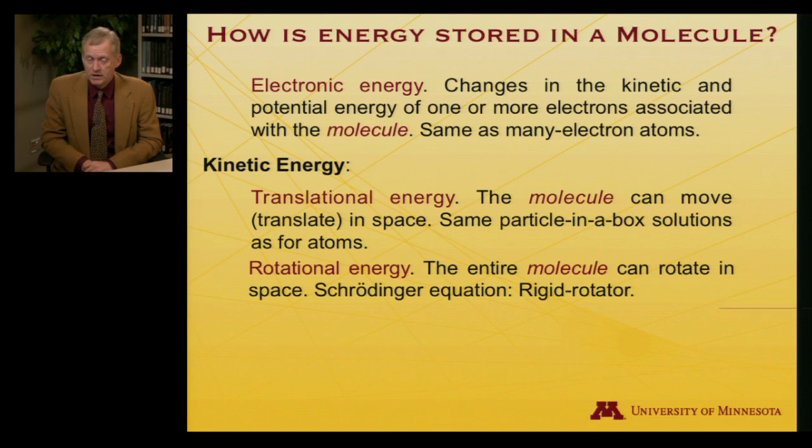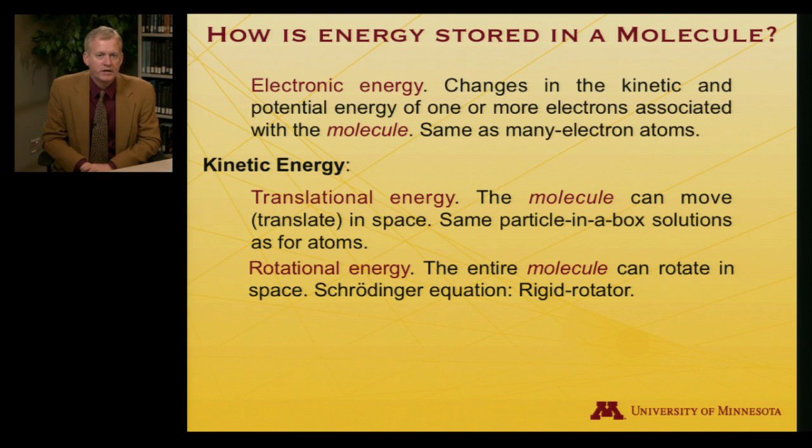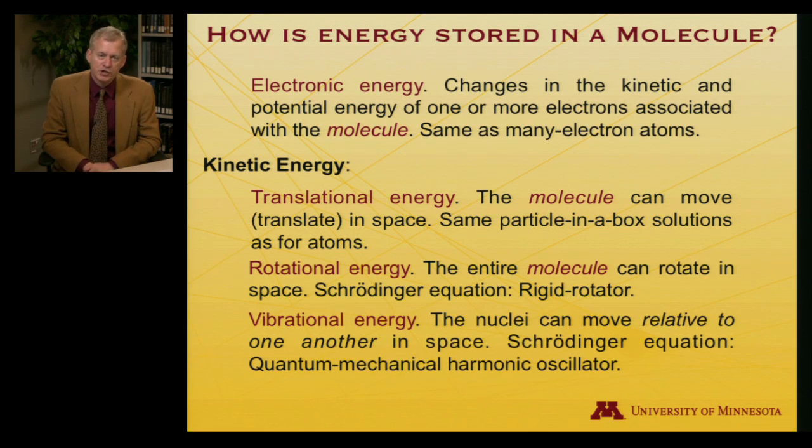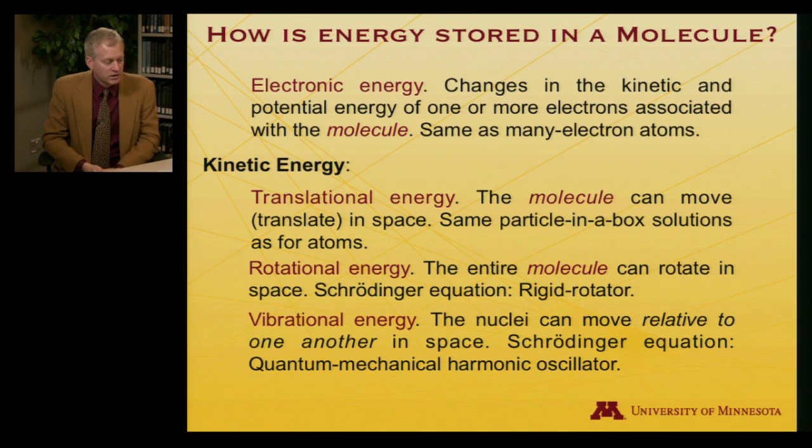However, translational energy is kinetic energy. There are two other kinds of kinetic energy available to a molecule that are not available to an atom. The first is rotational energy. So the entire molecule can rotate in space about various axes. And the relevant Schrödinger equation that we need to solve in order to get the allowed energy levels is called the rigid rotator equation. In addition, if I have two atoms connected by a bond, their motion relative to one another, a vibration, is a place where energy can be stored. And the relevant Schrödinger equation to understand the energy levels available for vibration is called the quantum mechanical harmonic oscillator equation. So each of those we'll take a look at to see what the available energy levels are.